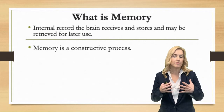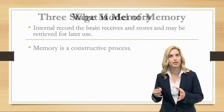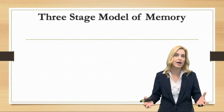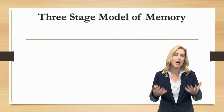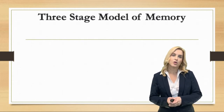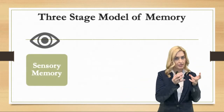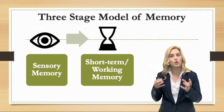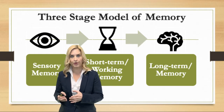One of the models or theories of memory is the three-stage model of memory. There are other theories of memory that you might read about in your textbook, but this is one of the most common and most widely used. We have three stages in this model: the first stage is sensory memory, the second stage is short-term, also called working memory, and the final stage is long-term memory.